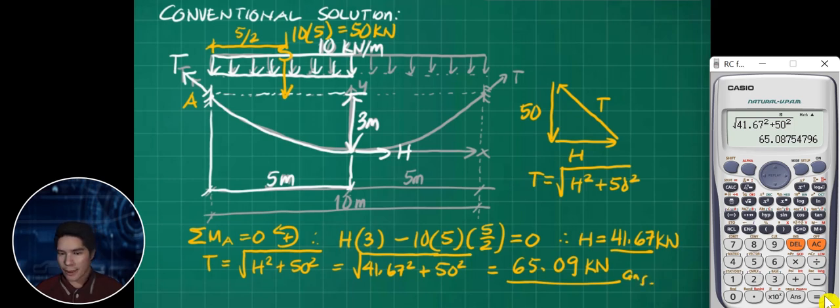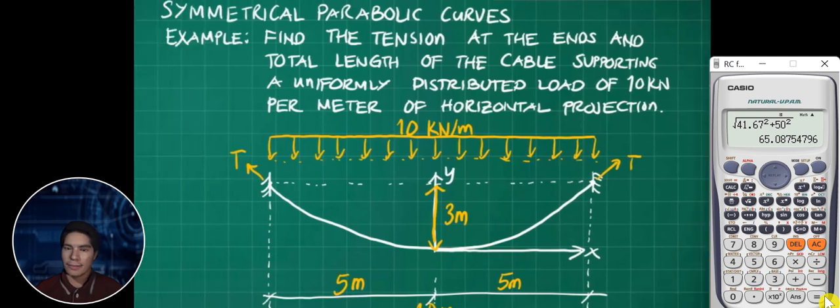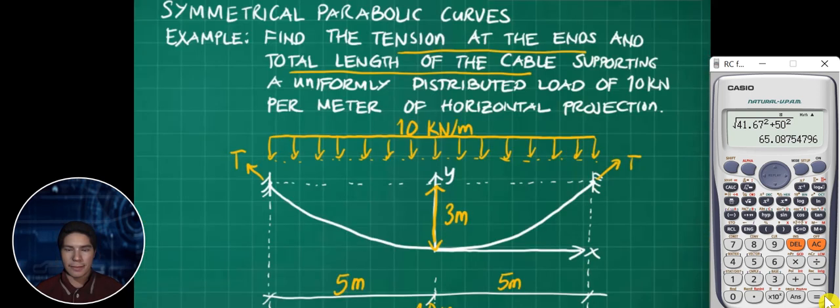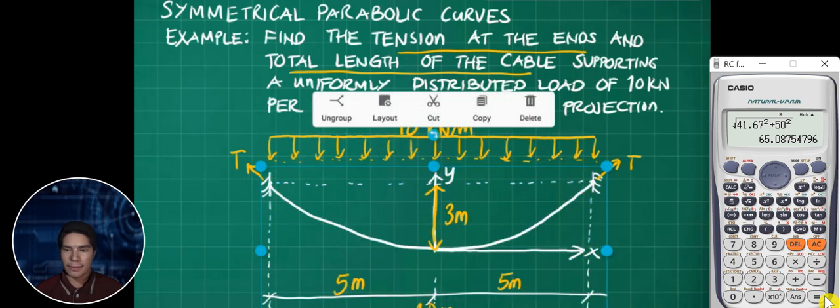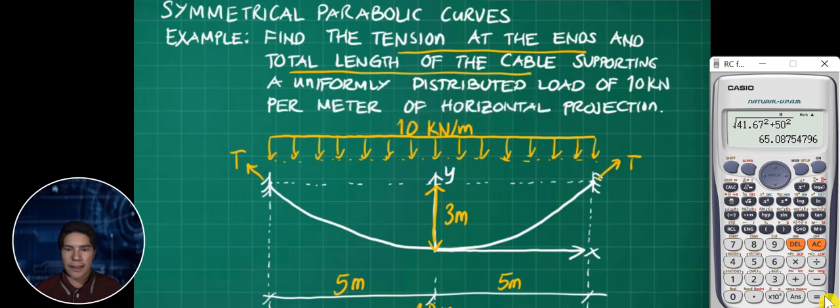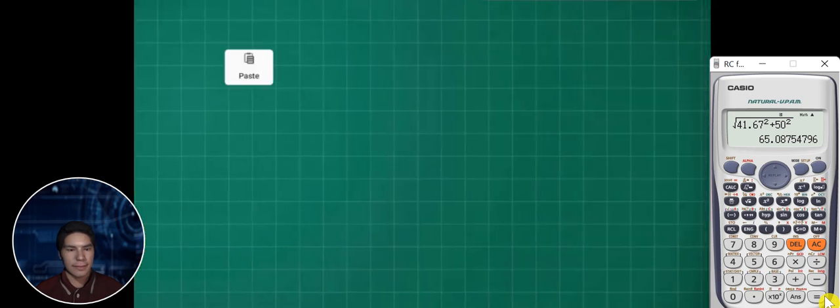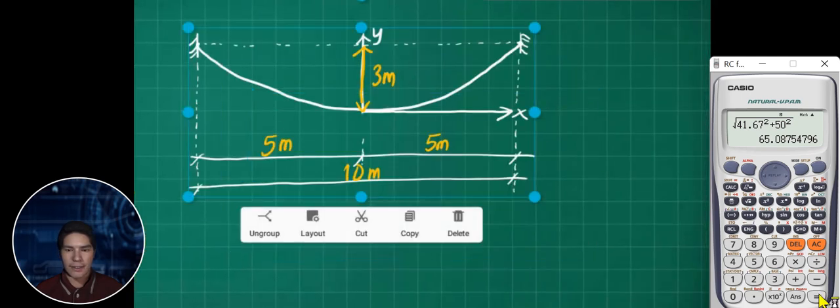Now the next question is: what is the total length of the cable? We're done with tension at ends. To solve for the total length, we'll go back to calculus. Considering the cable, we'll assume the lowest point will be the vertex.